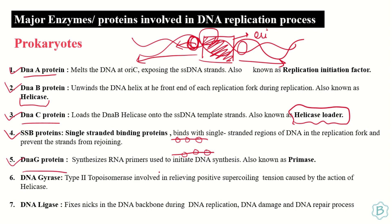Next is the DnaG protein, also known as primase. It synthesizes the RNA primers, which is very important in DNA replication because DNA polymerase cannot initiate biosynthesis from scratch — it needs primers so that, using their 3' overhang, the replication process can begin.